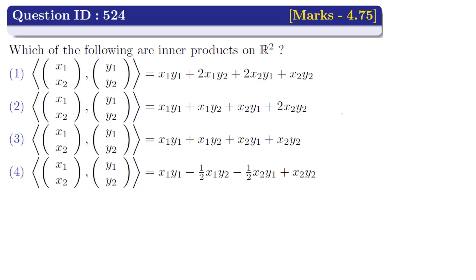Now let us solve the question. The matrix representation of Option 1 is [[1, 2], [2, 1]], where the coefficient of x1·y1 is 1, x1·y2 is 2, x2·y1 is 2, and x2·y2 is 1. Since the diagonal elements 1 and 1 are positive, but the determinant is 1 − 4 = −3, which is less than 0, this implies Option 1 cannot be an inner product.